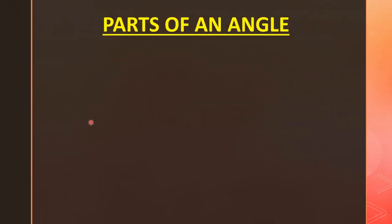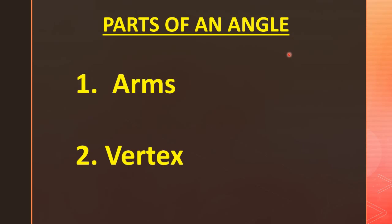Now we will see the parts of an angle. There are mainly two parts of an angle: first is arms, and the second one is vertex. Let's study this in detail.